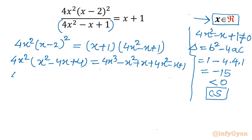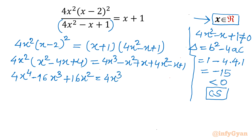Now I will expand the left-hand side, which gives 4x⁴ minus 16x³ plus 16x². The right-hand side simplifies to 4x³ minus x² plus 4x², so I can write plus 3x² and the x terms cancel, leaving plus 1.